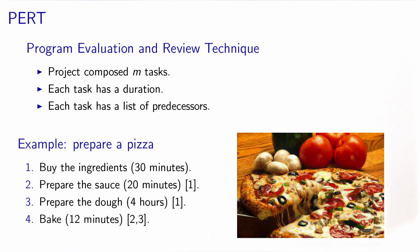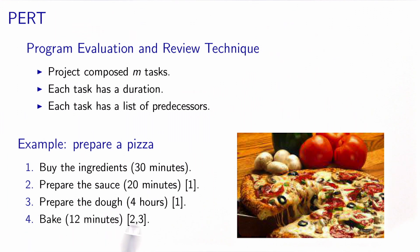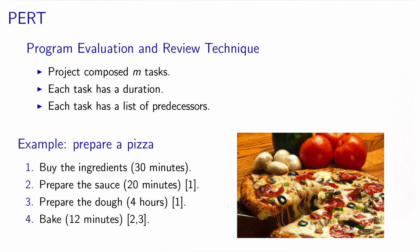Each task has a list of predecessors. In order to prepare the sauce, task 1 — buying the ingredients — must be completed. Similarly, preparing the dough also requires task 1 to be finished. And in order to bake the pizza, tasks 2 and 3 must both be finished. A predecessor is a task that needs to be terminated before the current task can start.